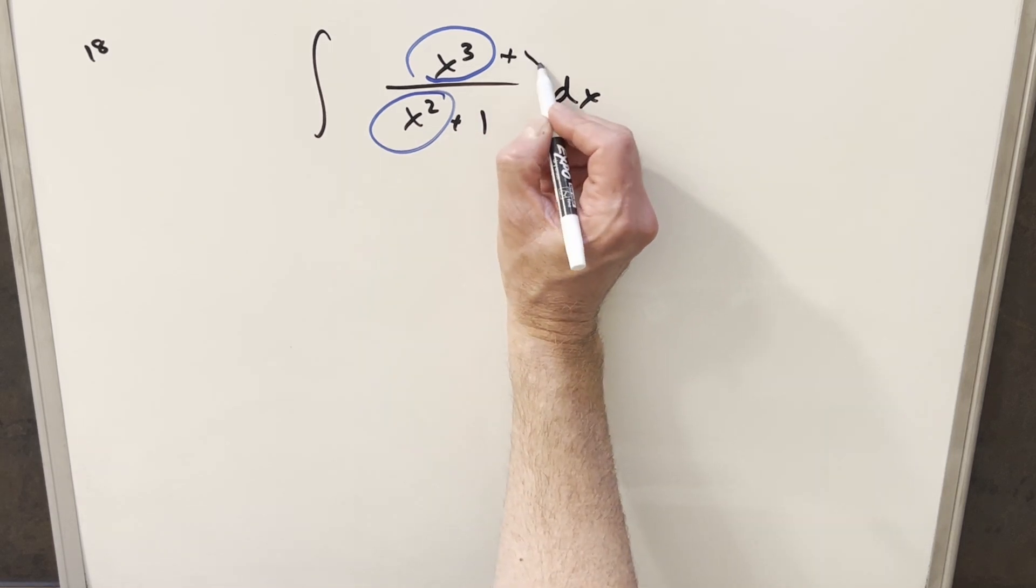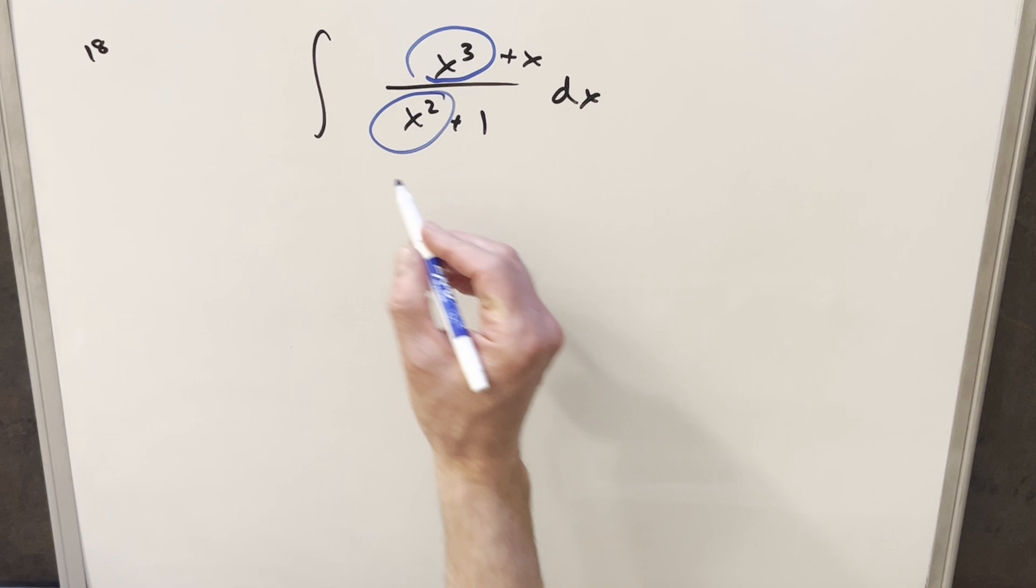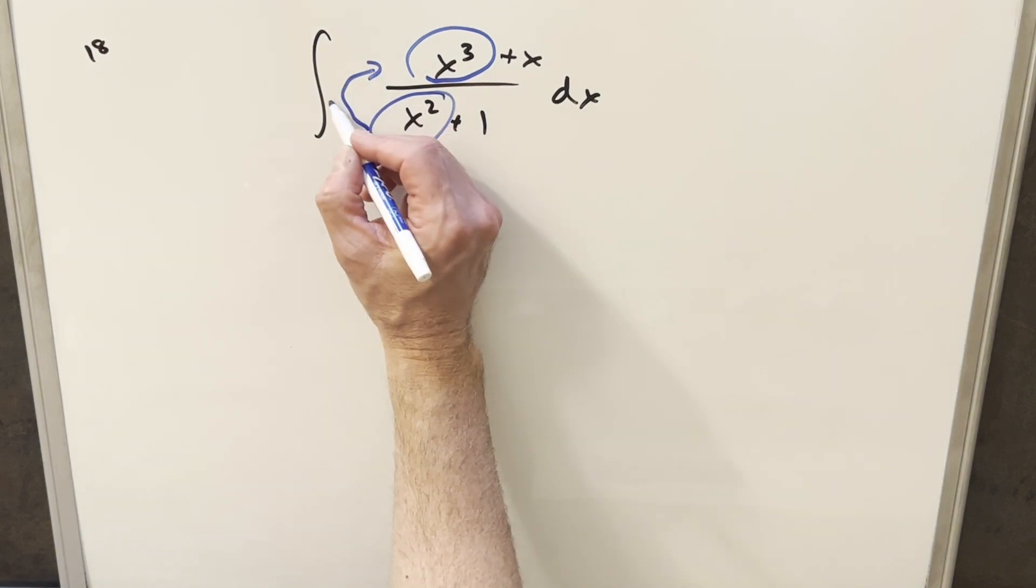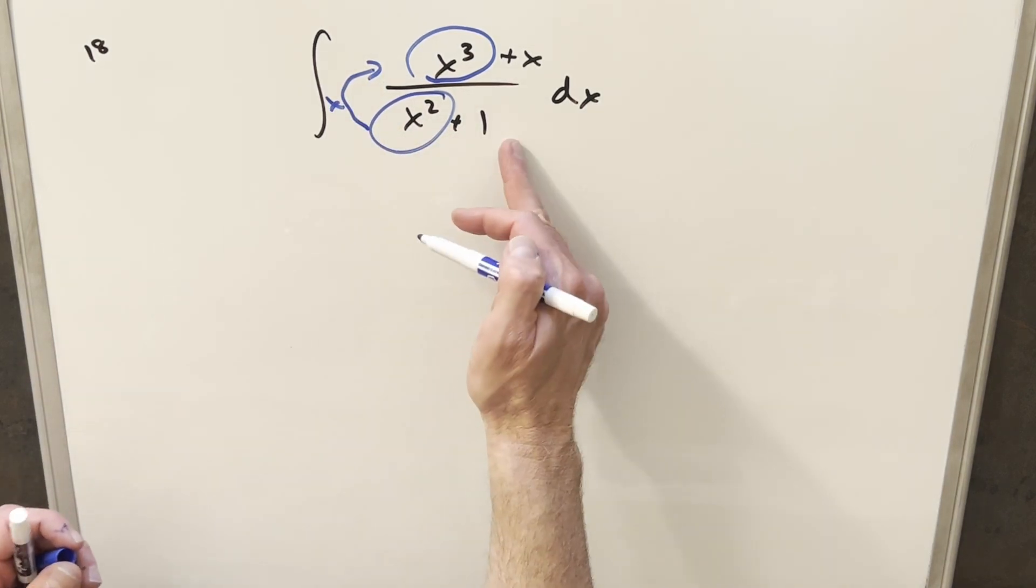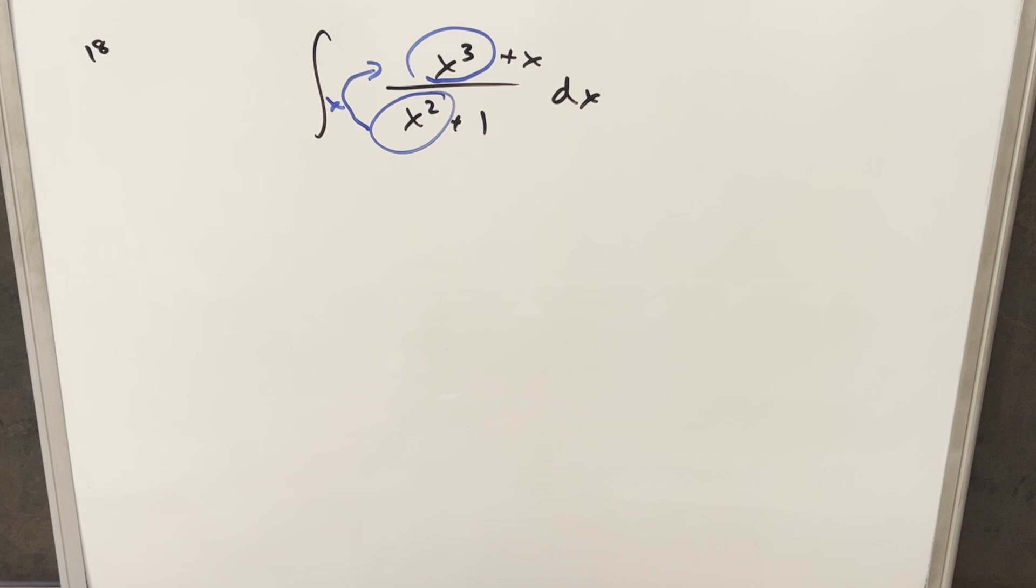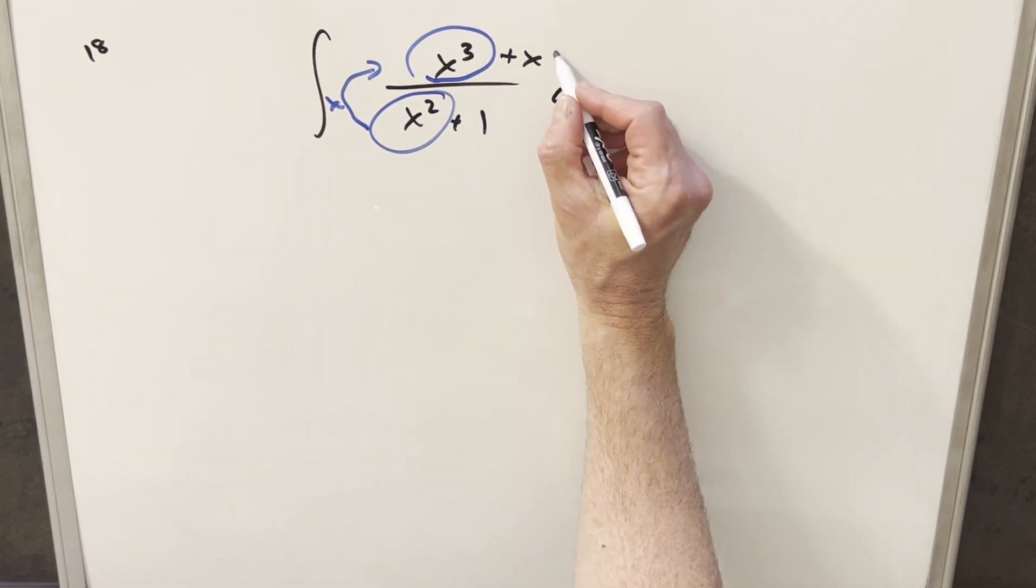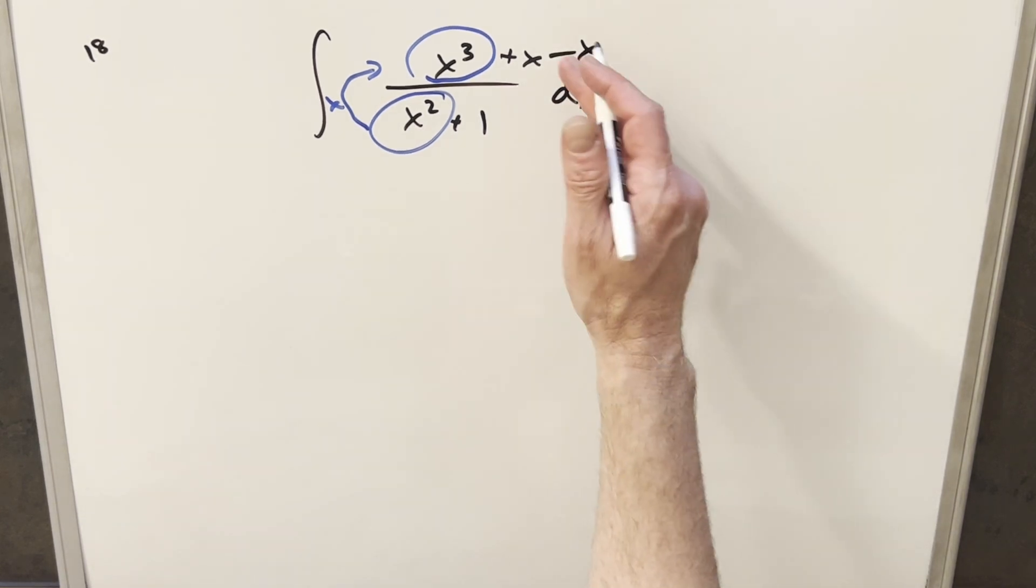So if I just add an x here, notice by doing that, if we multiply the denominator by x, we get back the numerator. So this is going to set us up to divide it, but I can't change this. What I'll do is also, if I add an x, I'll just subtract an x, so I'm adding 0.